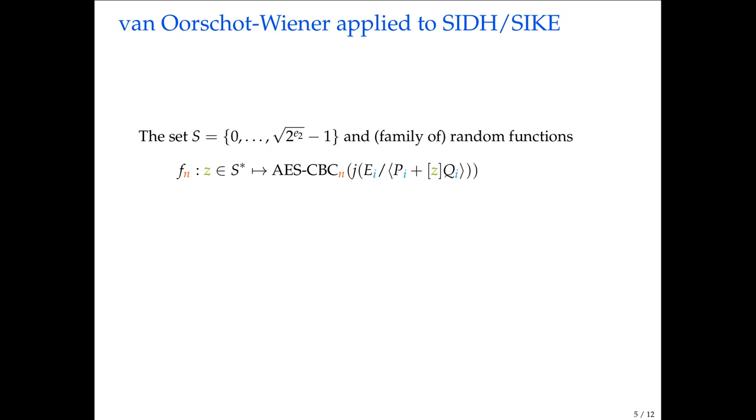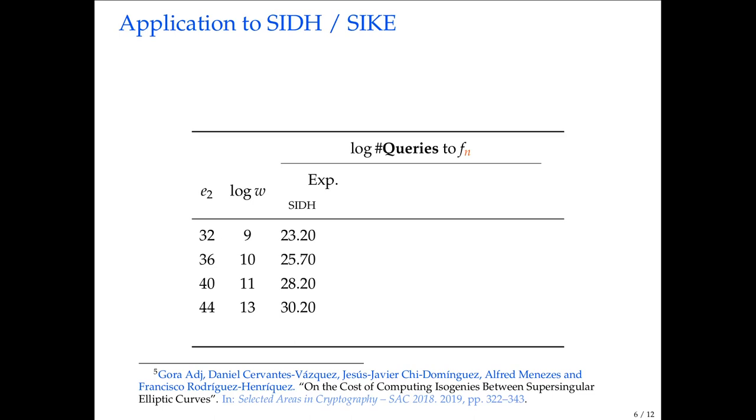How do we apply this to SIDH or Psyc? The set is of size square root the number of public key, so it's the square root of 2 to the E2 in this case. Then we define this Fn as follows. It looks complicated, but basically what it says, we start from EI, where this index I, if it's zero, we start from our starting curve, which is a public parameter. If the index is one, we start from the public key. Then from either of those two curves, we compute an isogeny walk corresponding to our input Z. So Z is just some bit string that basically says at each node that we end up on, we get two choices and it tells you which of the two to take. Finally, we end up on the J invariant and we apply AES or some variant of AES to this keyed with N. That's some randomly behaved function that we apply to the J invariant.